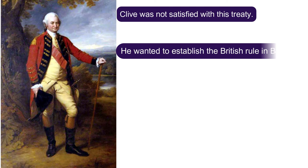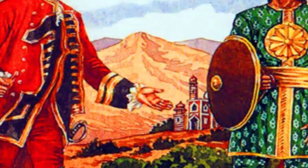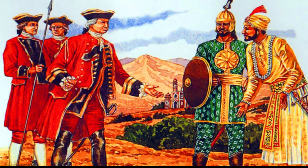But Clive was not satisfied with this treaty. Clive wanted to establish British rule in Bengal, so he started looking for an opportunity to attack the Nawab. Finally, it was a golden chance for Clive when he came to know about the internal disputes for the seat of Bengal. In this situation, he joined hands with Mir Jafar, who was the chief commander of the Nawab's army, and promised to make him Nawab of Bengal.